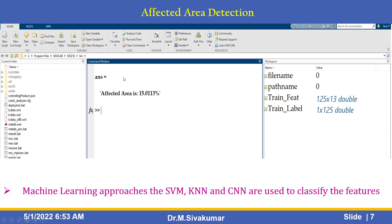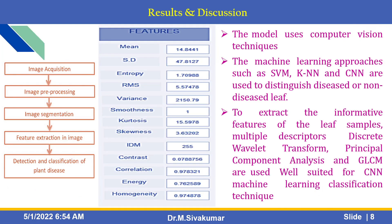Now we can apply machine learning approaches. Support Vector Machine, KNN, and CNN are used to classify the features here. These are the techniques we are using: load the image, image acquisition, image preprocessing, image segmentation, feature extraction, and finally you can detect the classification of plant disease.